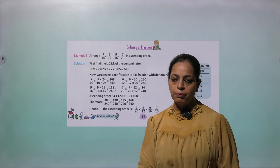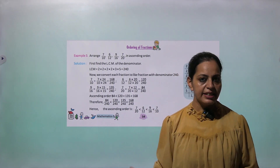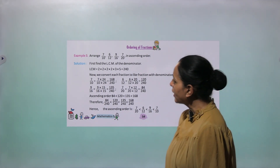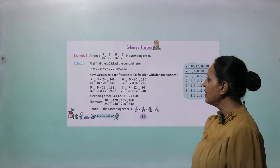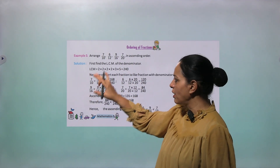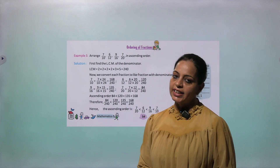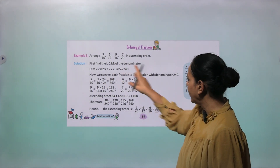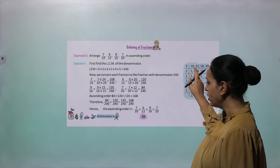Now let's look at ordering of fractions — arranging them in ascending or descending order. We compare first, then arrange. Example: Arrange 7 by 10, 6 by 12, 9 by 16, and 7 by 20 in ascending order. All are unlike fractions with different denominators, so first we take the LCM of 10, 12, 16, and 20. The LCM is 240.